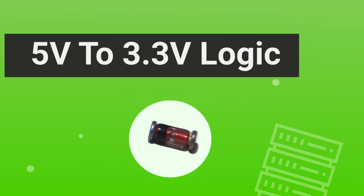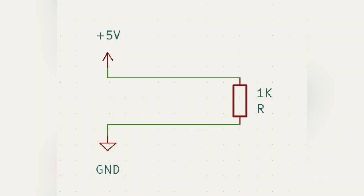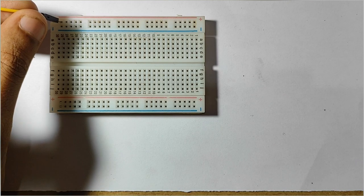To convert 5 volt to 3.3 volt logic using a forward biased diode, connect the resistor as shown in the circuit diagram for testing.